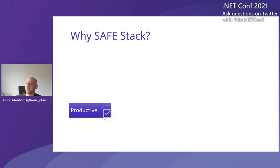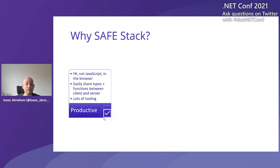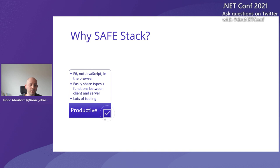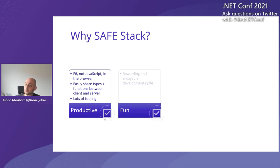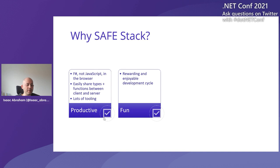Why would you use SafeStack? First, it's super productive. You can focus on F-Sharp rather than JavaScript in the browser. If you're coming from a static background like C-Sharp or F-Sharp, JavaScript can feel unusual without static types. F-Sharp is super powerful, simple, robust, and type-safe. You can share types between client and server, and there's lots of tooling: Visual Studio, Rider, VS Code on the server, and all the React tooling in the browser. It's also fun — people using SafeStack constantly say it's a rewarding experience, particularly if coming from a non-web background.